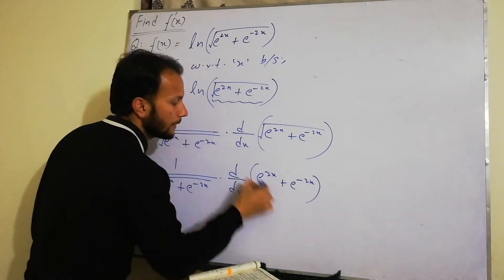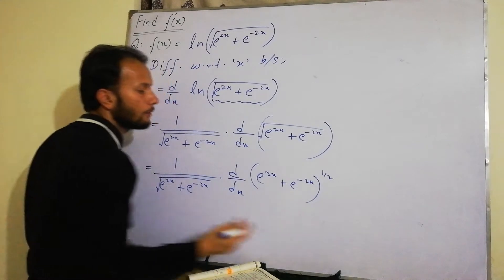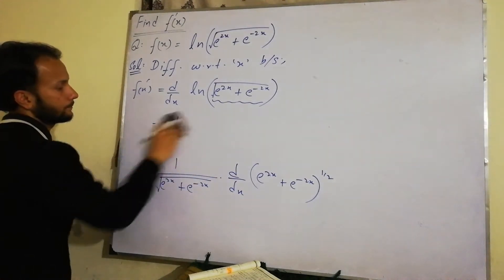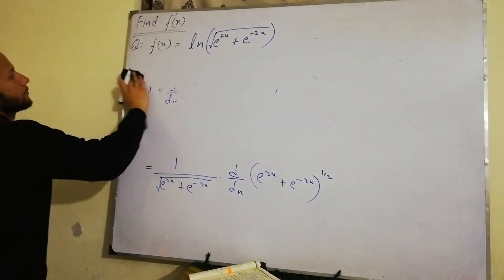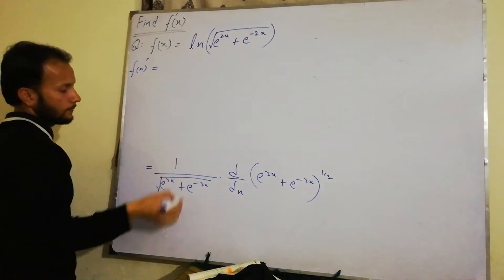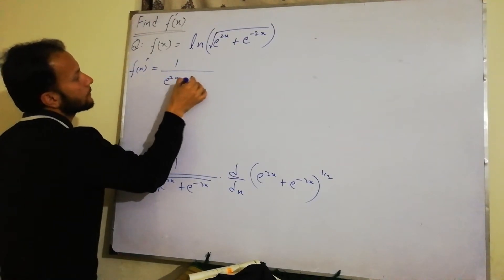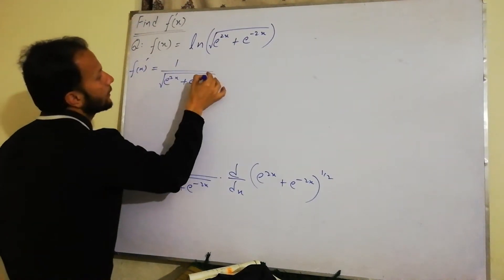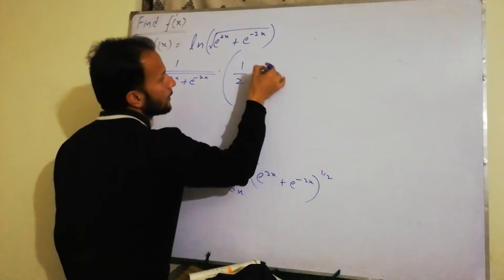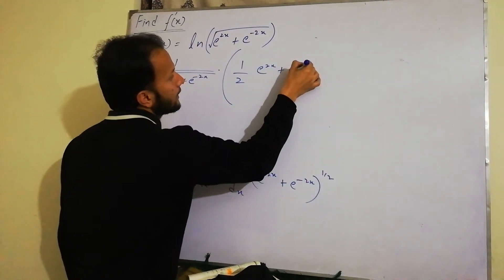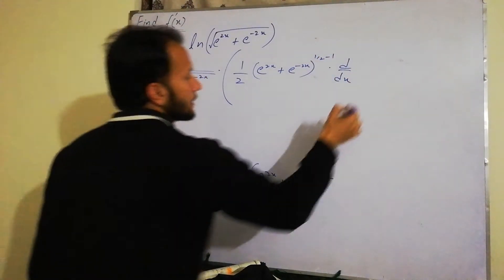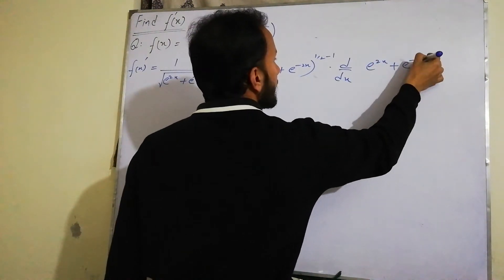We write the expression in power form. Using the power rule, the first derivative is 1 divided by (e to the power 2x plus e to the power minus 2x, under root), multiplied by the power brought down from the exponent, into the derivative of the base e to the power 2x plus e to the power minus 2x.